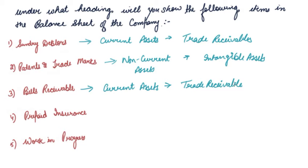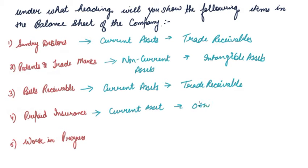Then comes prepaid insurance. Prepaid insurance is another kind of current asset that you have, and it comes under the category of other current assets.